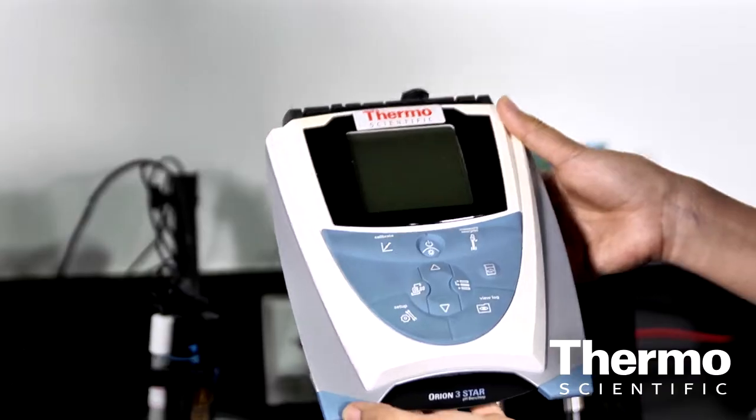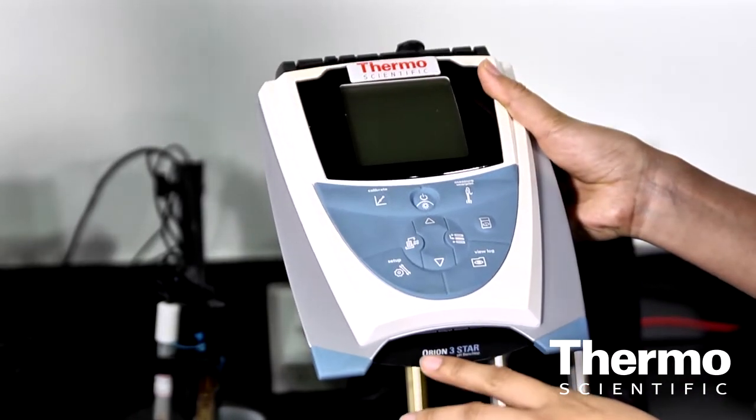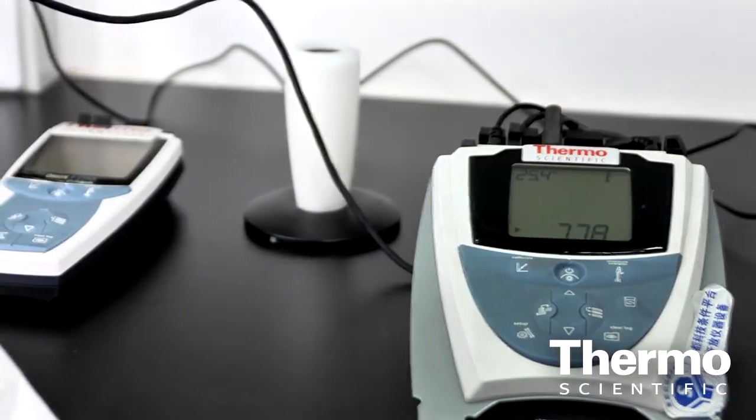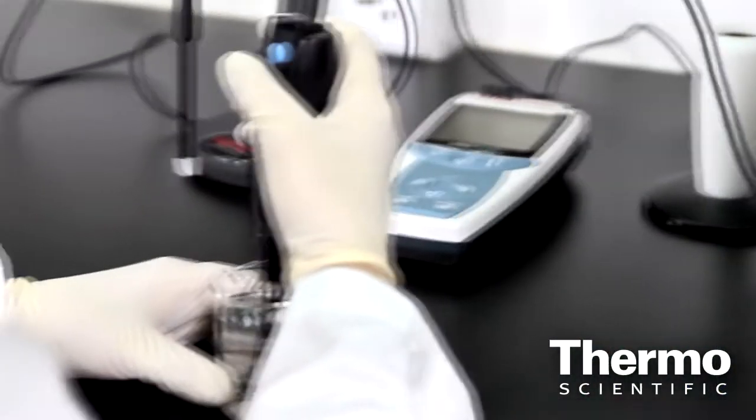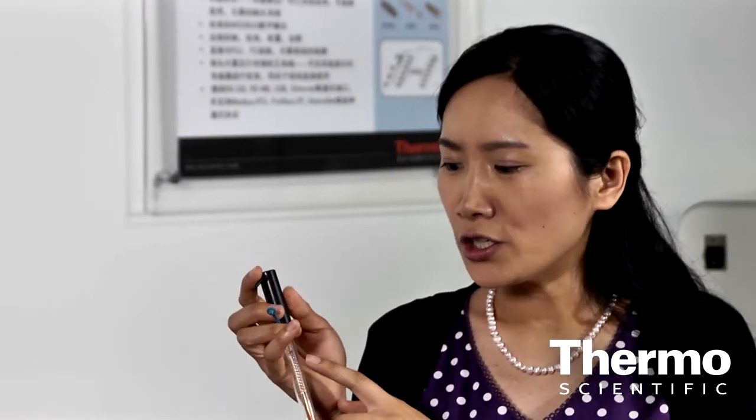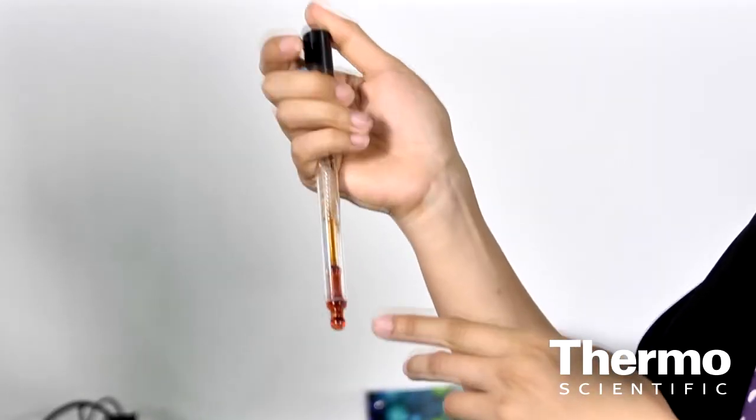We mainly offer two brands, Thermoscientific Orion and UTEC for water quality detection. Our Thermoscientific Orion products have been well-known to electrochemical analysts. I want to highlight two technologies, the first ion-selective electrode and pH electrode in our ROS reference system. They were both invented and manufactured as commercial products by Thermoscientific Orion.